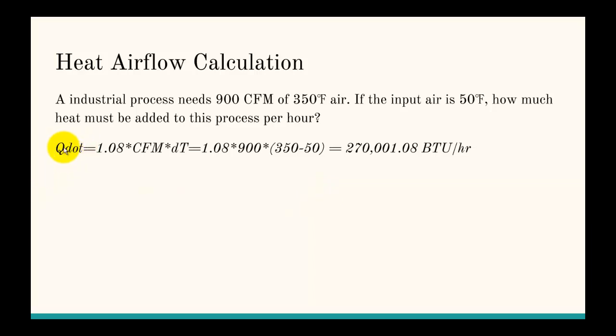Heat flow Q dot is going to be 1.08 times CFM times delta T. This equation is for air. That's a nice equation to remember because it has CFM and delta T sort of built in. So 1.08 times the 900 CFM, which we get from up here, times the change in temperature which is 350 minus the 50 and it gives us 270,001.08 BTUs per hour.